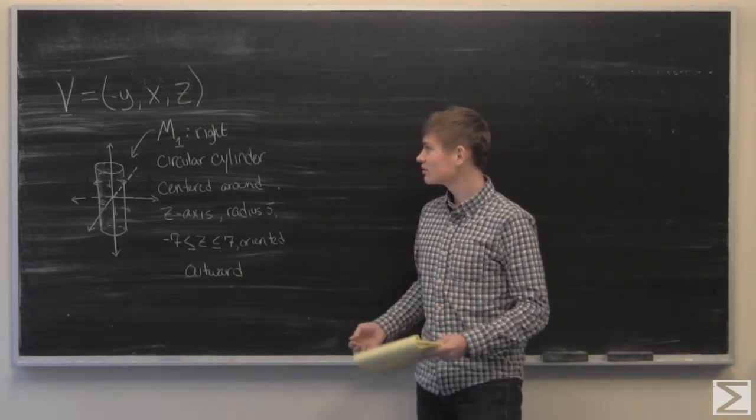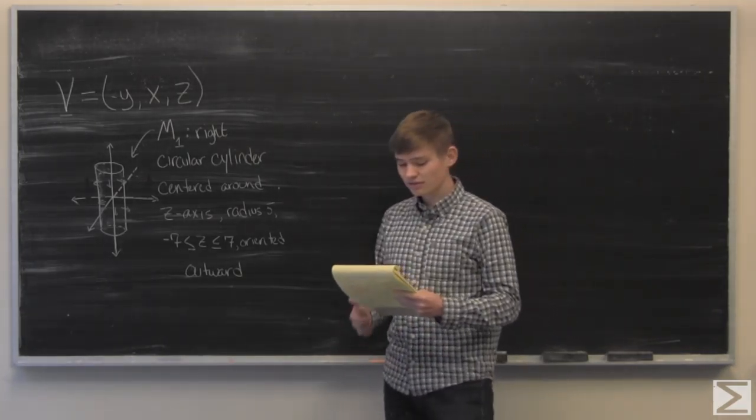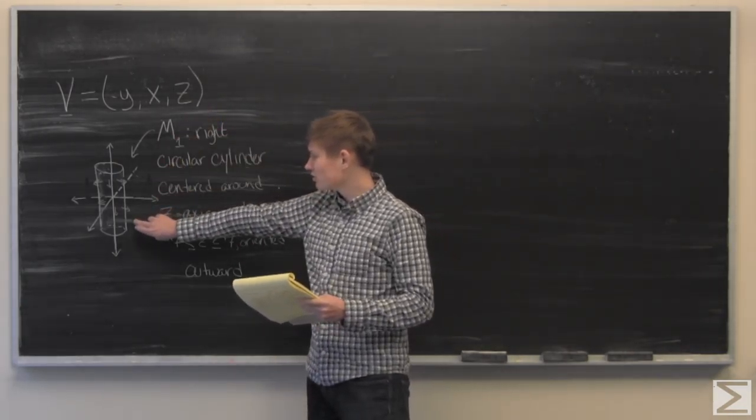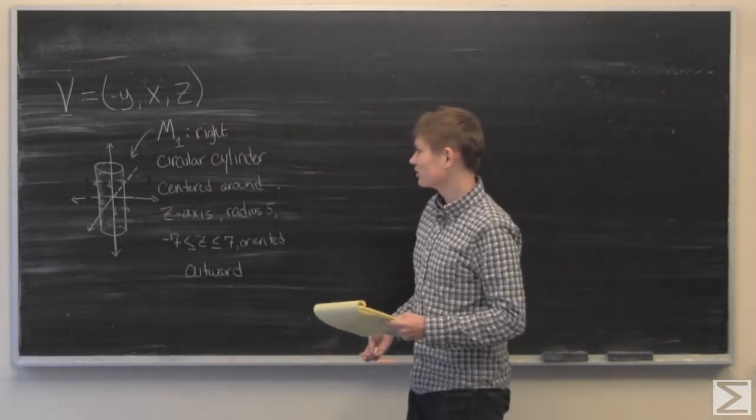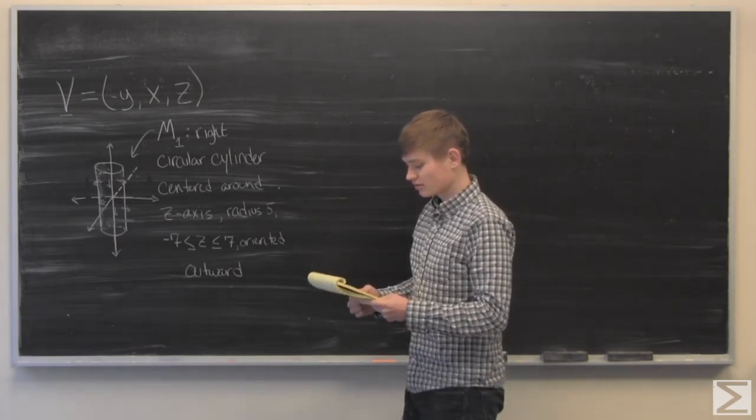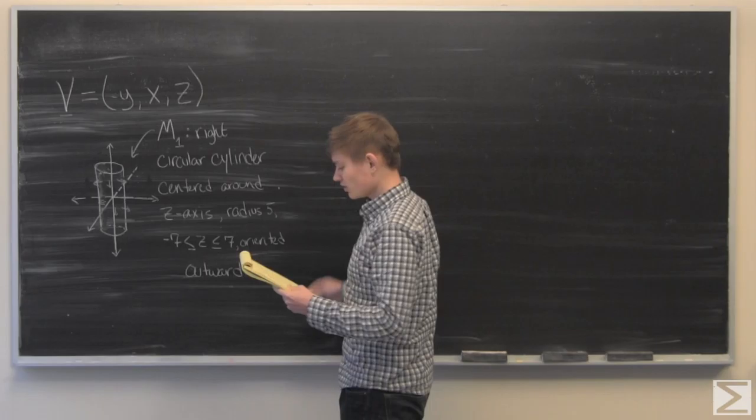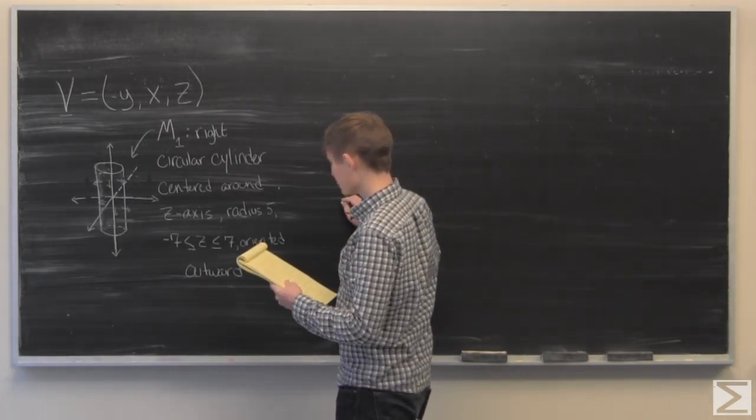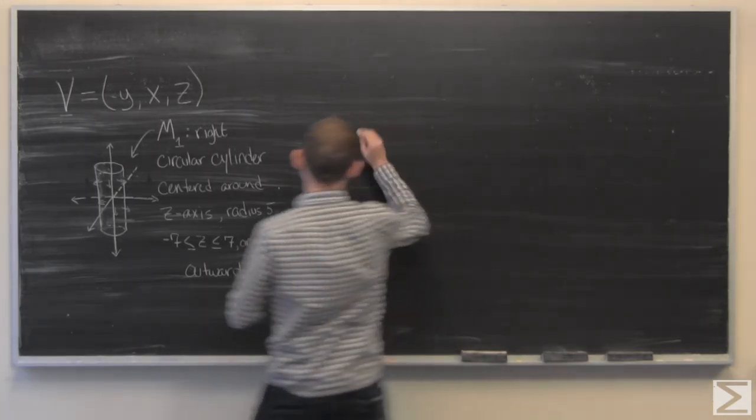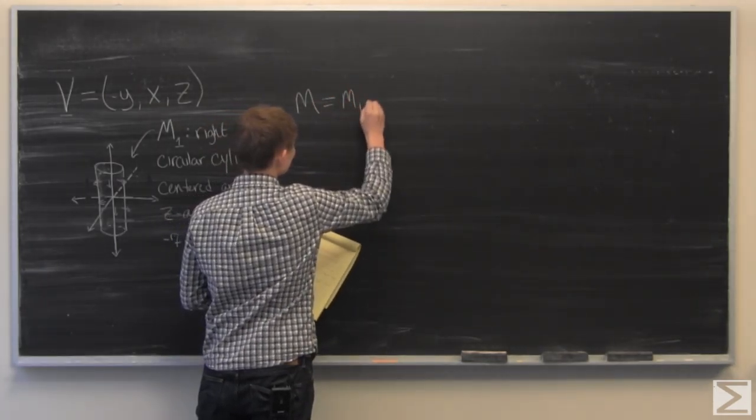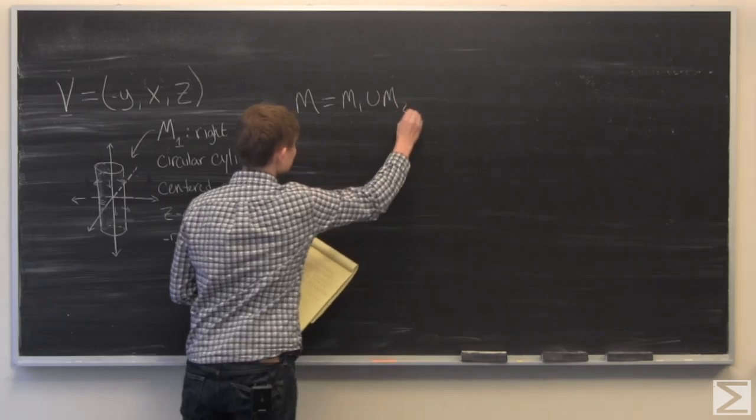So this problem is calculating the flux of V through this surface, and it's a multi-step process. Part A is to find a convenient closing surface M2, such that M is the union of M1 and M2.